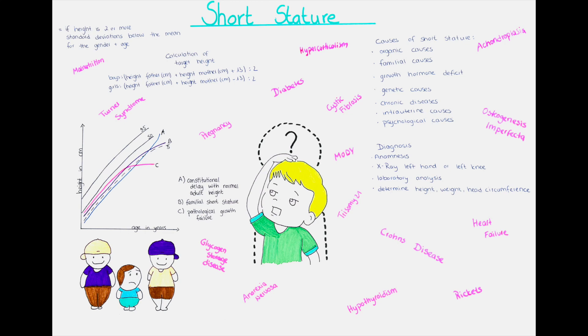Other causes for short stature include intrauterine causes, as for example if the mother consumed alcohol during the pregnancy, if she had any infections or placental insufficiency, for example caused by smoking during the pregnancy, or if the mother did not have sufficient nutrition while the child was developing in the womb.